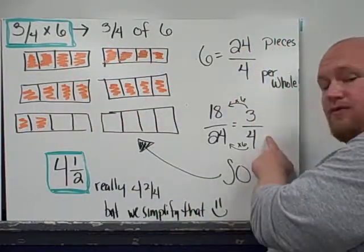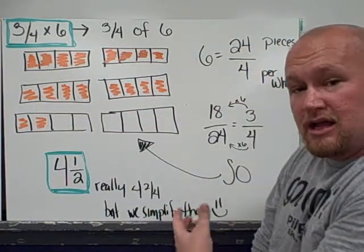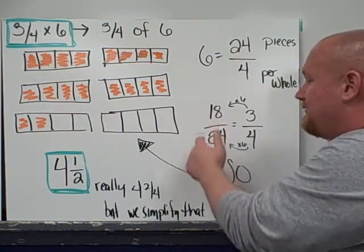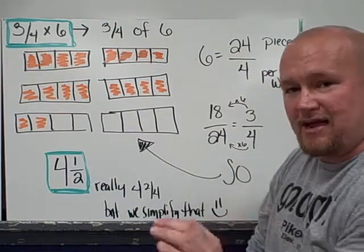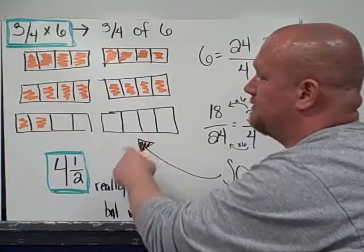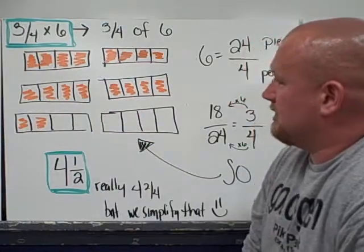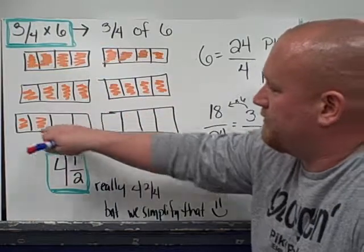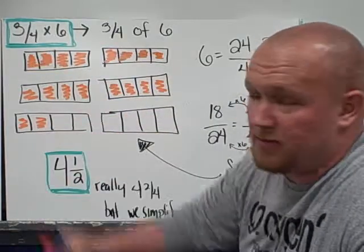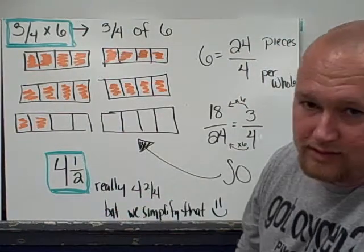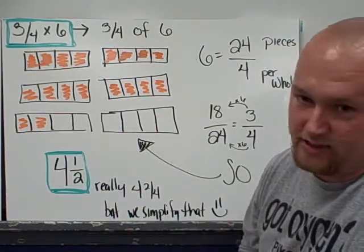Well, if I take three-fourths and I make an equivalent fraction multiplying the top and bottom by six, I get eighteen out of twenty-four pieces would be the same as three-fourths. So, knock off eighteen pieces in orange, that ends up being one, two, three, four and a half just like the model beforehand. Really, it's four and two-fourths, but we simplified in our head.